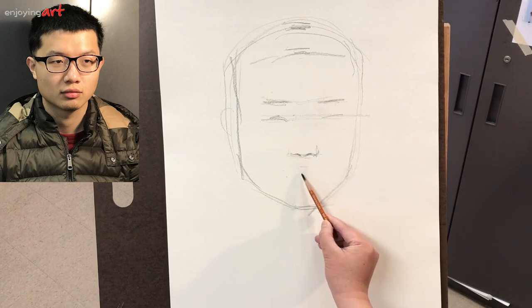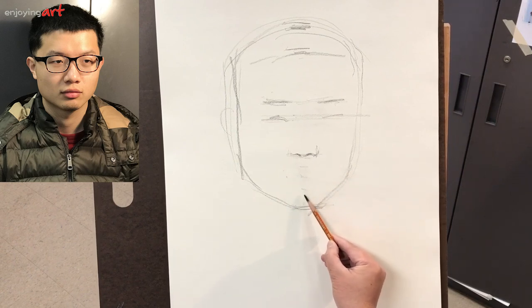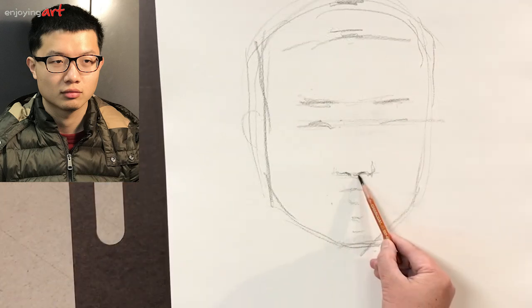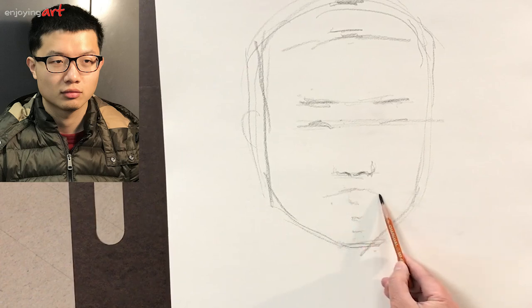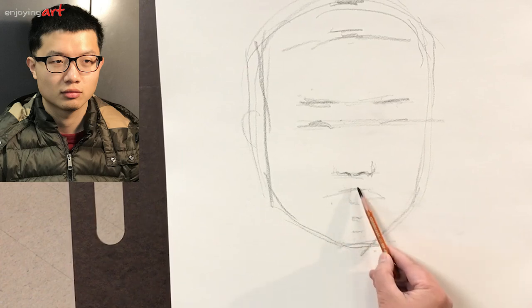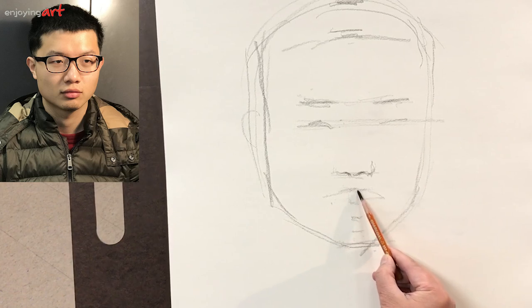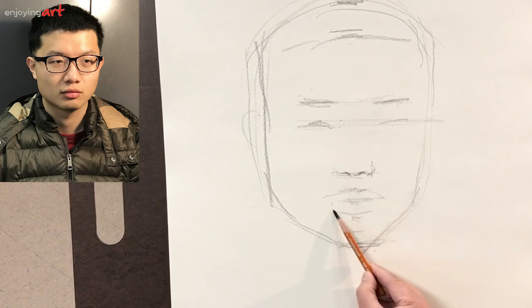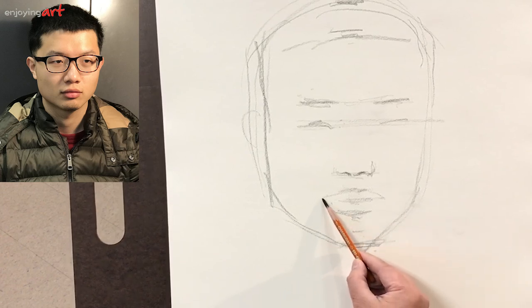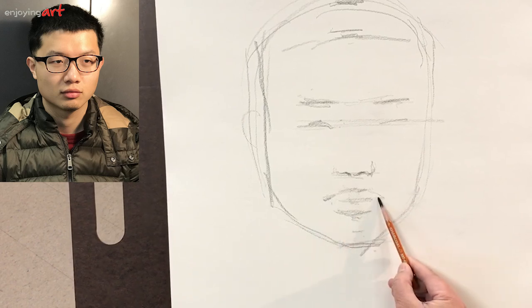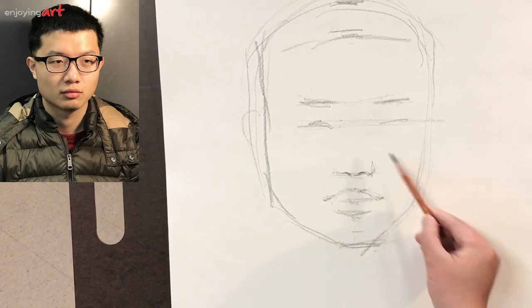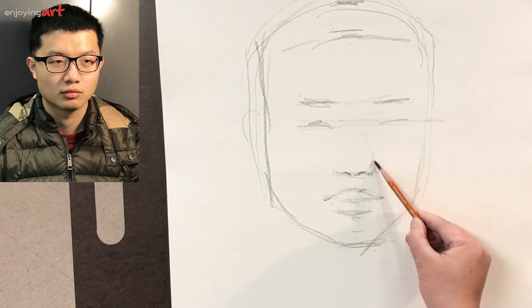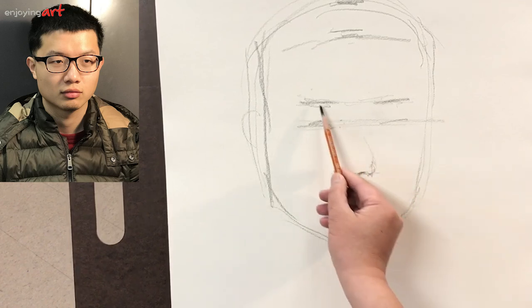Now we're going to divide the section from nose to chin into five equal parts: one, two, three, four, five. Two parts are for the chin. At the top is the distance between the mouth and the top of the lip, then the lower lip, and the chin deserves two of these units. This applies pretty well to this portrait. Let's find those locations. I'm going to ignore the eyeglasses for now — later, if I finish the whole portrait, I'll add them.